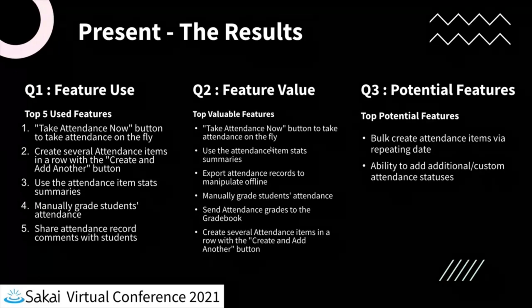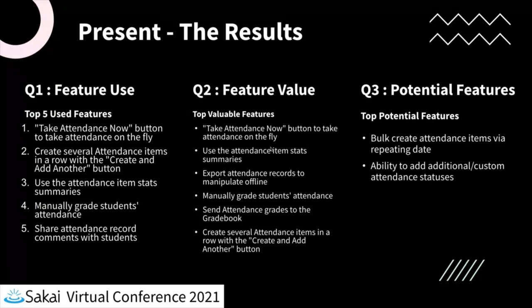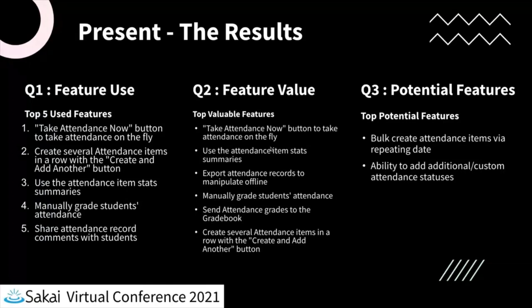There are a lot of similarities between what's most used and what's most valued, which is typical. One exception is grading — a lot of respondents said it was very valuable, but fewer said they actually used it, which provides useful insight. The top five features were: the 'take attendance now' button for immediately jumping in, creating several attendance items in a row, stat summaries, manually grading, and sharing comments with students — all highly used features.